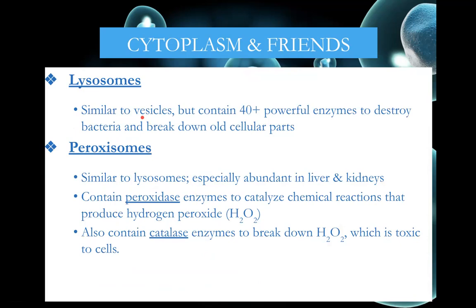Lysosomes are like vesicles, but they contain lots of enzymes that help to break things down. Anytime we need to destroy bacteria or break down old, worn-out parts of the cell, lysosomes take care of that — they're like the garbage bin. Peroxisomes are similar but more specialized. They catalyze chemical reactions that produce hydrogen peroxide (H2O2), which is toxic inside the cell, so another enzyme called catalase breaks the peroxide down into less toxic products like water and oxygen.